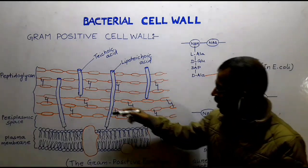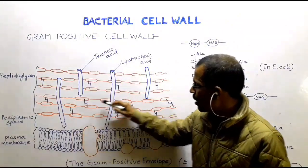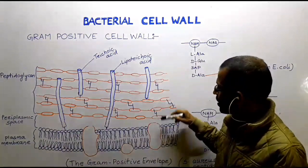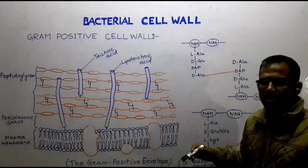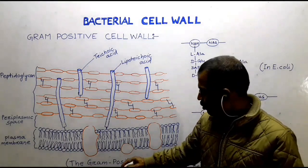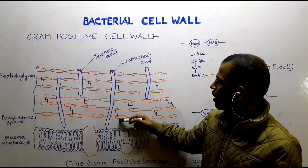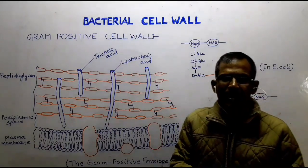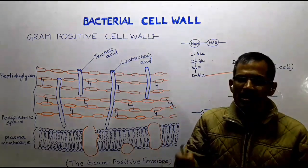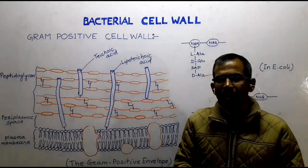In gram-positive cells, the periplasmic space present between the plasma membrane and the cell wall is smaller. This space contains relatively few proteins because any proteins secreted by the cell into the periplasmic space easily diffuse through the porous peptidoglycan. The enzymes secreted by gram-positive bacteria are called exoenzymes, which degrade polymers that are too large to be transported into the cell across the plasma membrane.